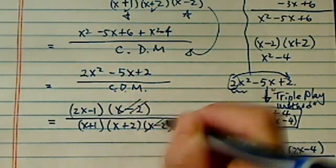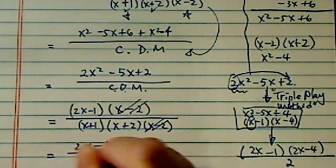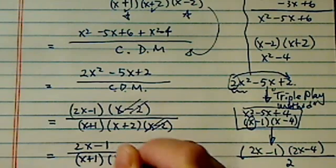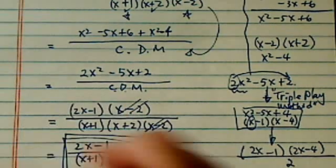x minus 2 cancels out, and then I have 2x minus 1 divided by x plus 1 times x plus 2. Okay, that's the final answer.